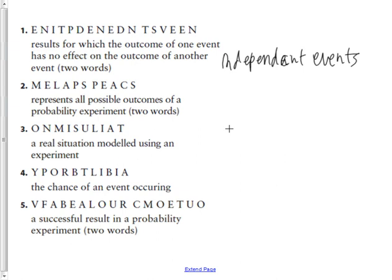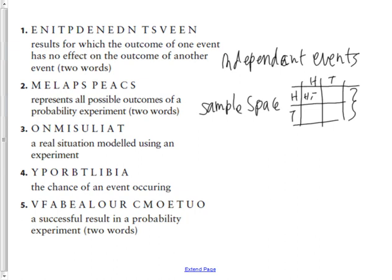The second one, Malapis X, represents all possible outcomes of a probability experiment. What's that decoded? Alexis. Sample space is correct.